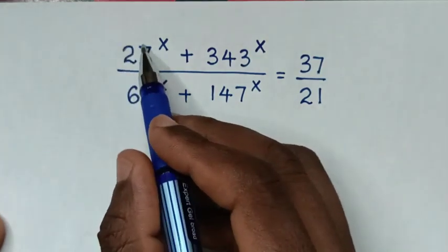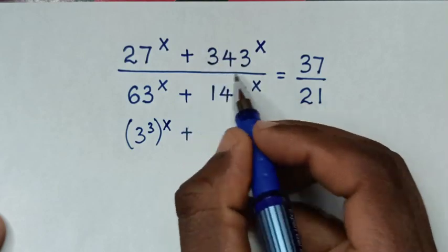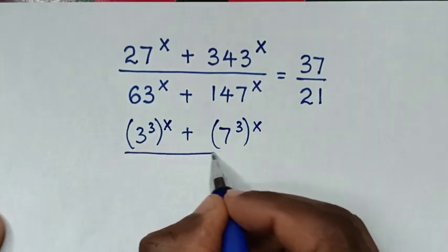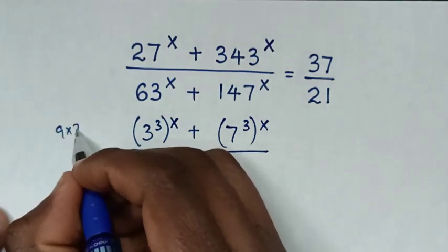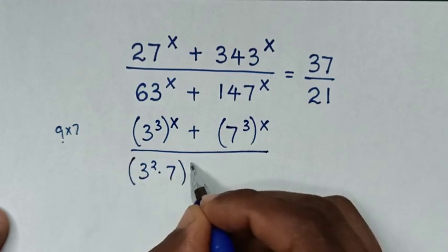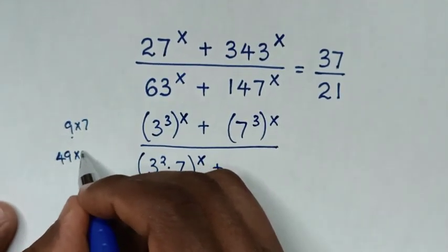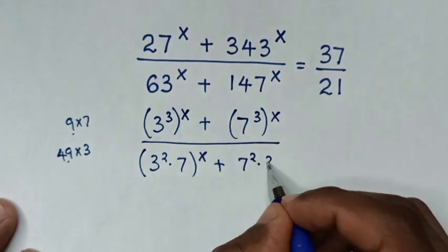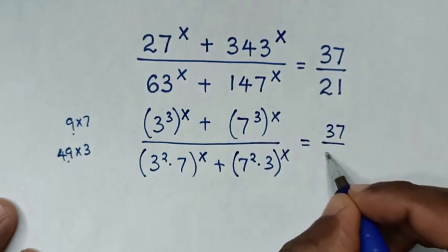So, 27 is the same as 3^3, then bracket power of x, plus 343 is the same as 7^3, then bracket power of x, over 63 is the same as 9 times 7, whereas 9 is 3 squared, then times 7, bracket power of x, plus 147 is the same as 49 times 3, whereas 49 is 7 squared, then times 3, bracket power of x, is equal to 37 over 21.